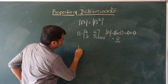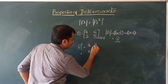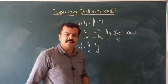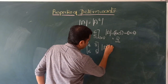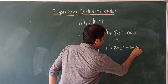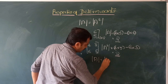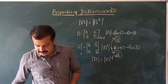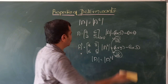Now let me calculate A transpose. We interchange the rows and columns, giving A^T = [4, 3; 6, 5]. Then det(A^T) = 4×5 − 6×3 = 20 − 18 = 2. So det(A) equals det(A transpose) — the value of the determinant does not change even if we interchange the rows and columns of the matrix. That is the first property.